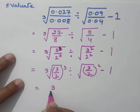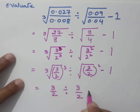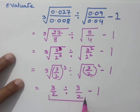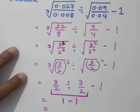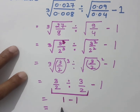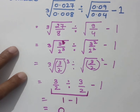The cube root cancels the power 3, and the square root cancels the power 2, so you get 3 by 2 divided by 3 by 2, minus 1. Now apply the DMAS rule — division is done first. 3 by 2 divided by 3 by 2: any number divided by itself gives 1. So it becomes 1 minus 1, and the final answer is 0.